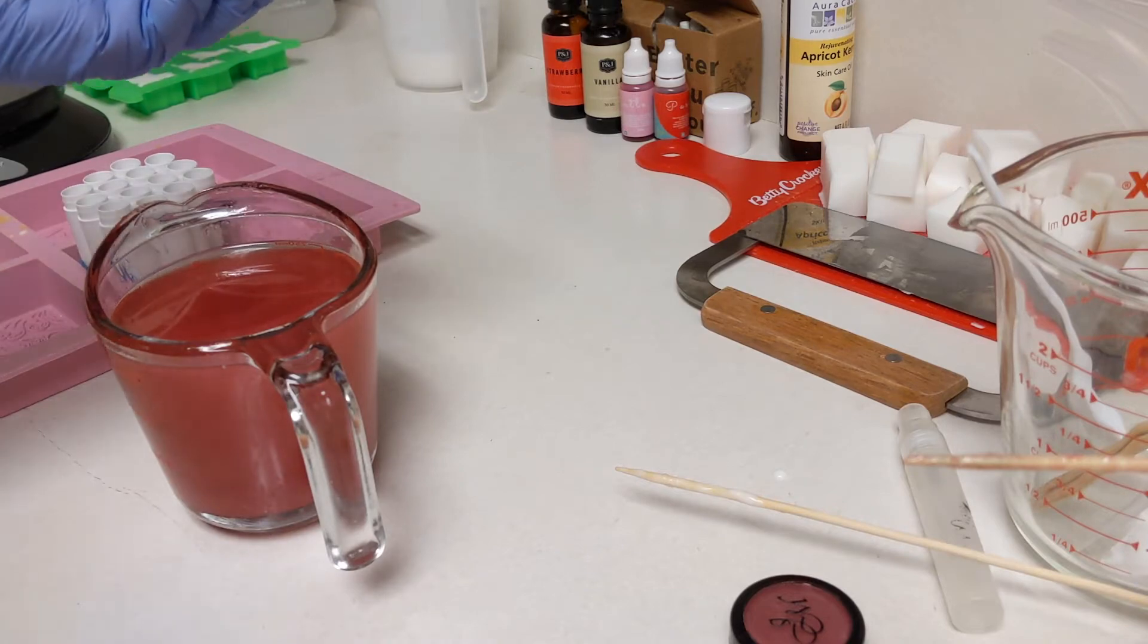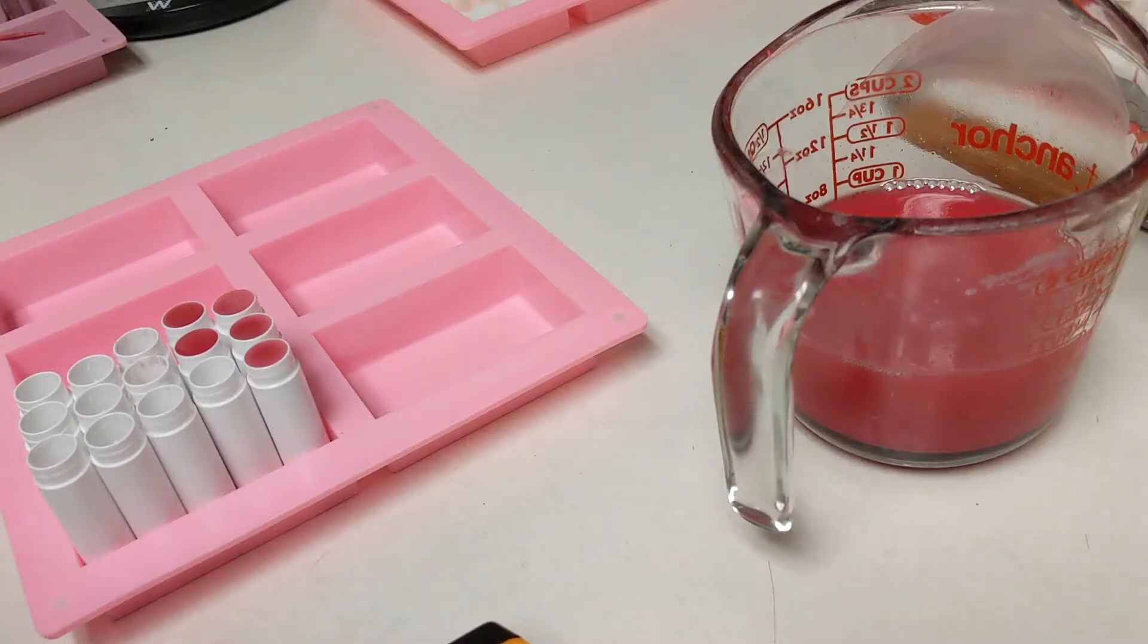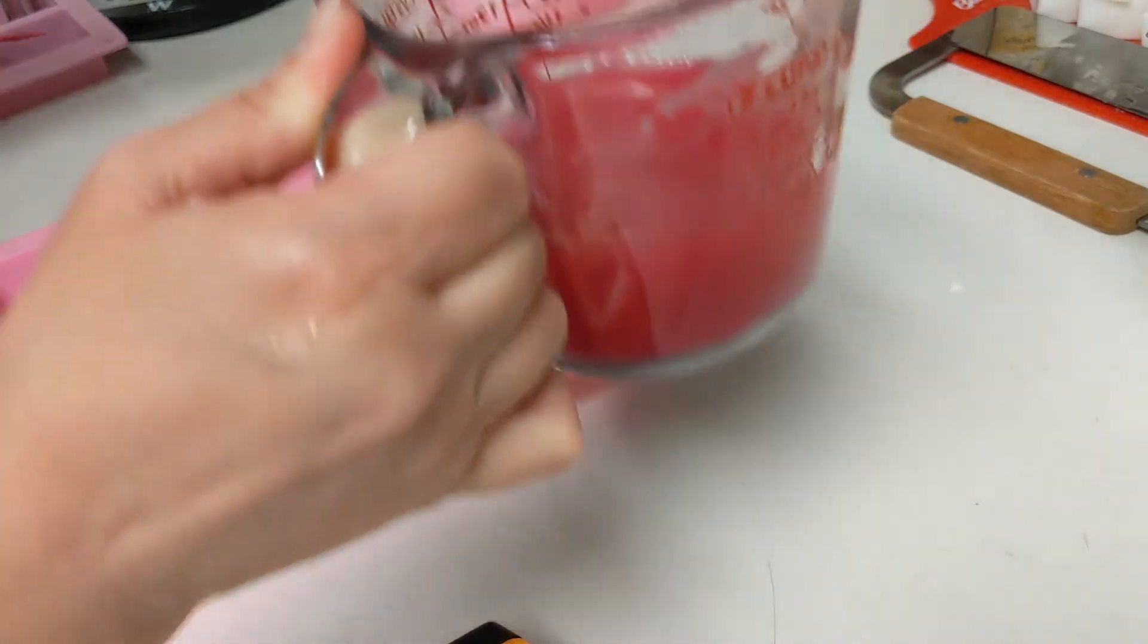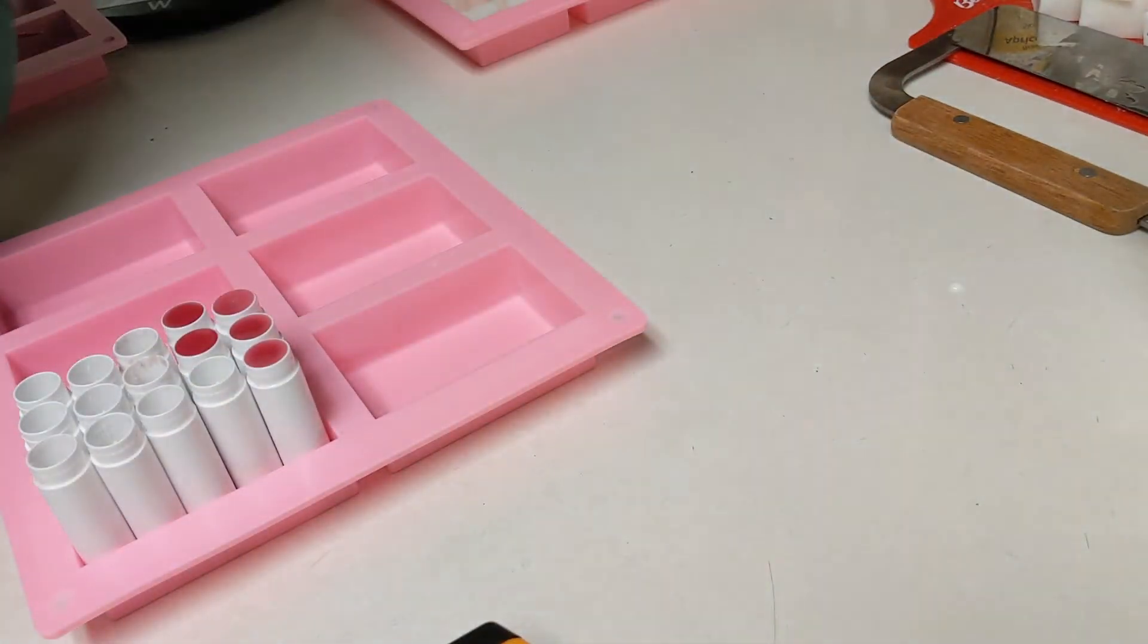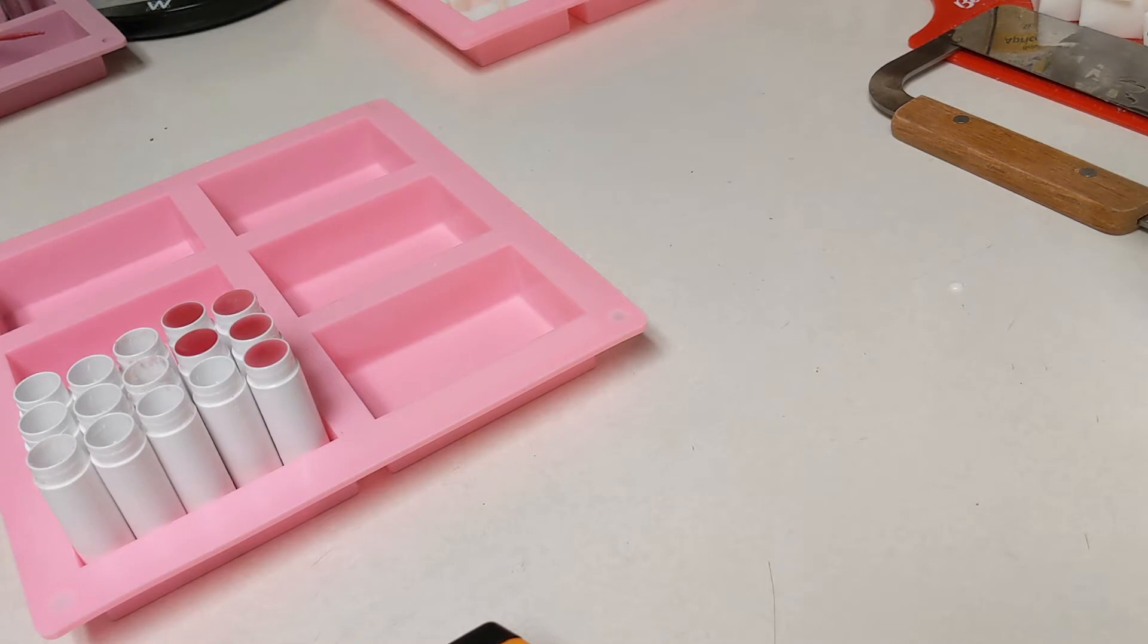This is what it looks like after I've got the flavoring in it and I've got the coloring in it, the mica. So I started pouring it into the containers.